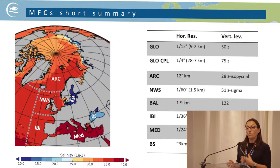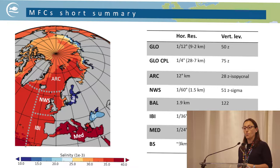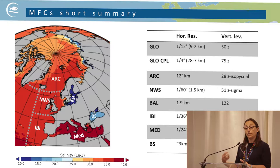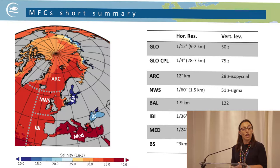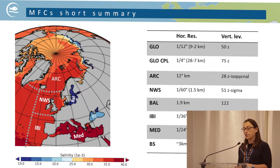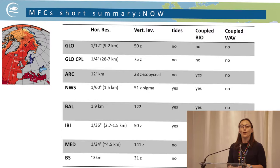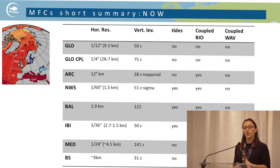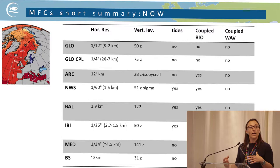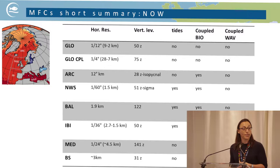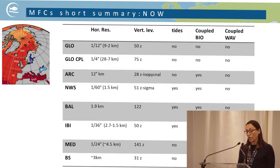There is a table summarizing the differences between systems in terms of resolution, which can vary quite a lot in horizontal resolution and in the vertical discretization used. Some systems have geopotential coordinates, others use isopycnal or sigma coordinates. Some systems include tides, and some are coupled to biogeochemical models or wave components.